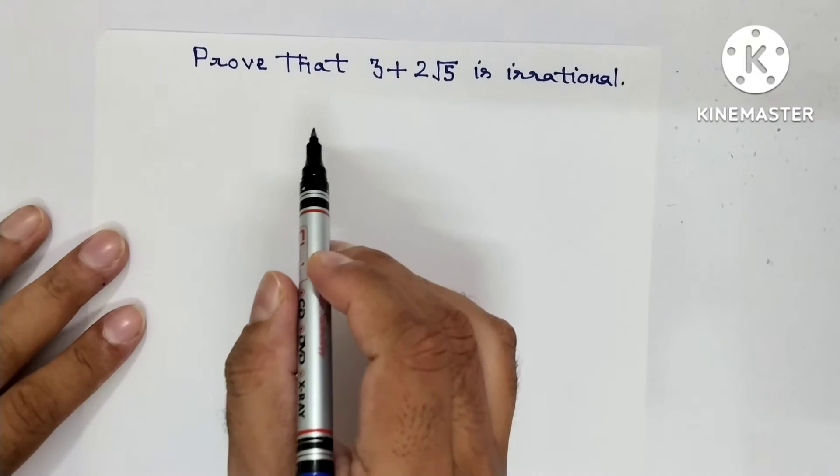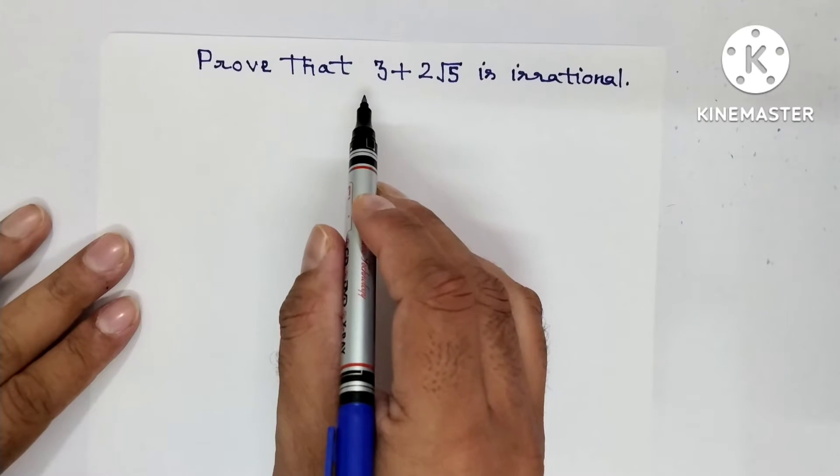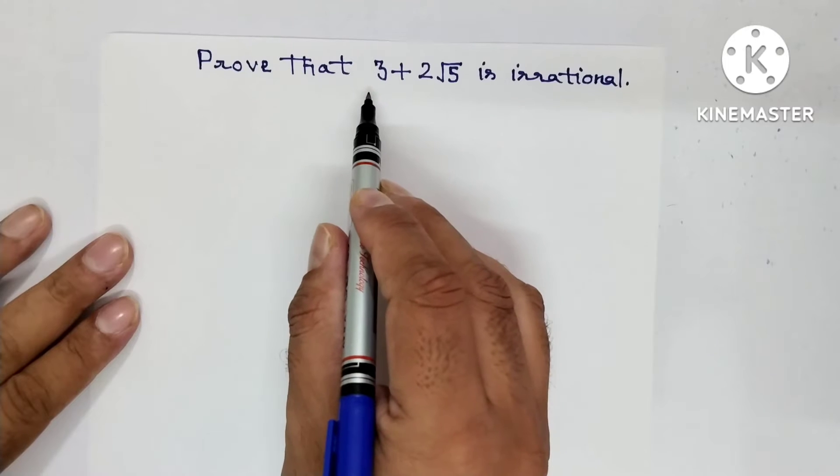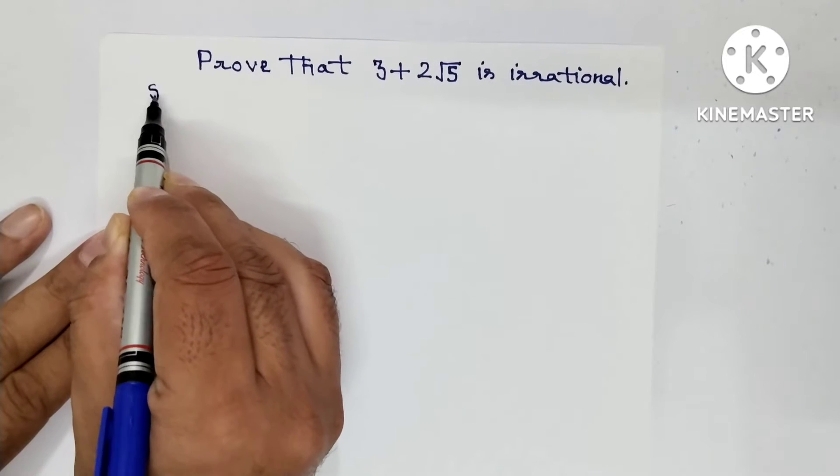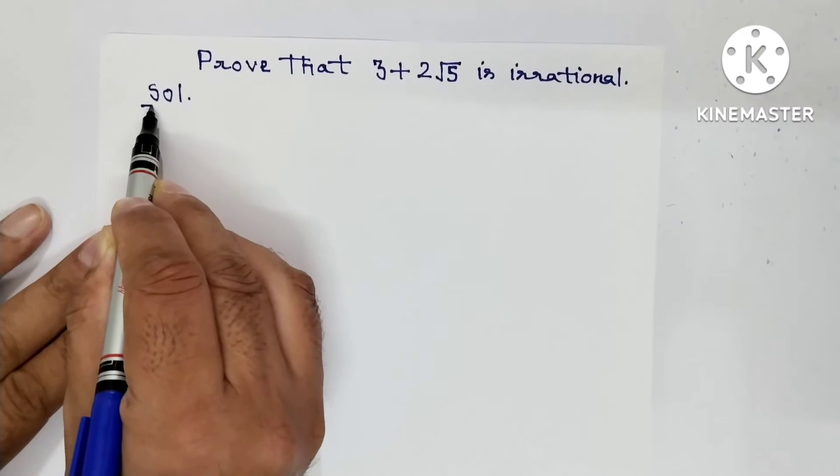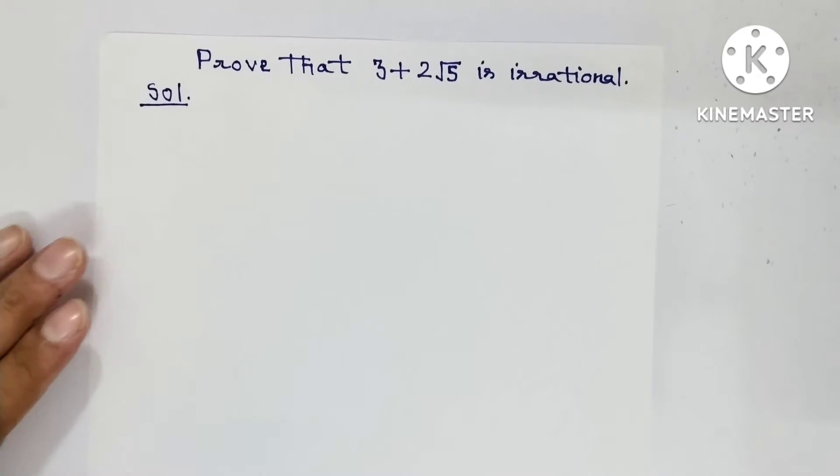Hello everyone, in this video I am doing an extra question of chapter 1 real numbers of class 10th. Prove that 3 plus 2 under root 5 is irrational. Yes, already we know that this is irrational.